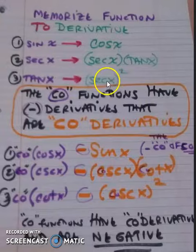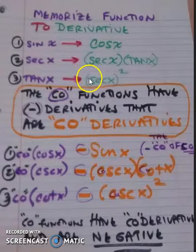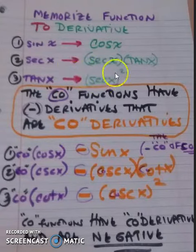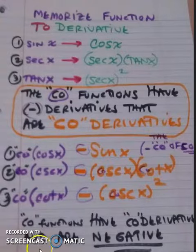Tangent's derivative is secant squared. Its co-function is cotangent. The derivative is the co-derivative for this, cosecant squared. And all the co-functions have negative derivatives. I hope that helps you memorize.